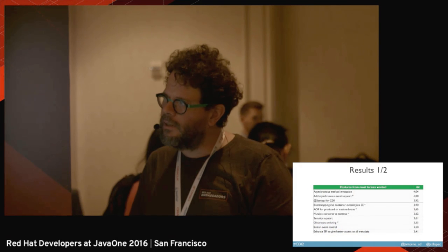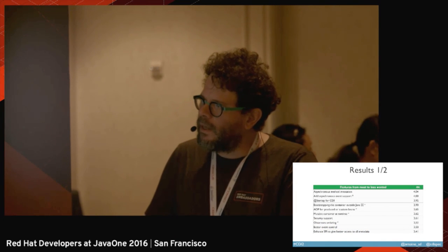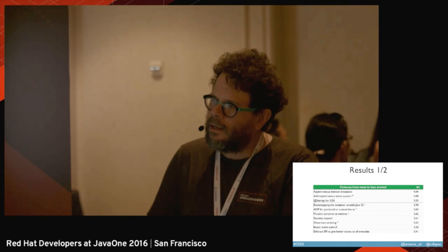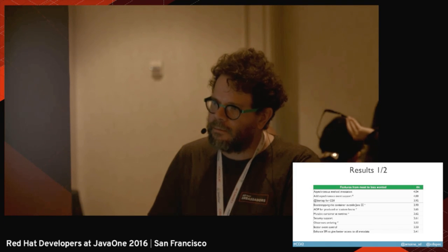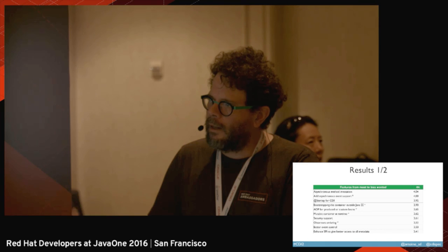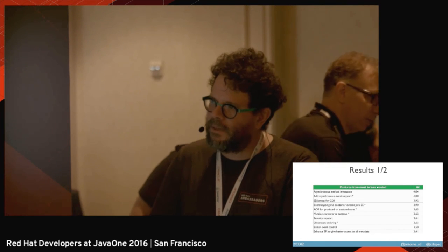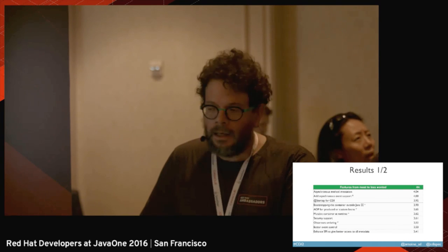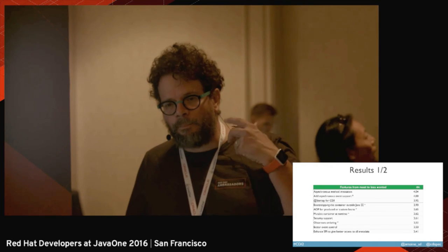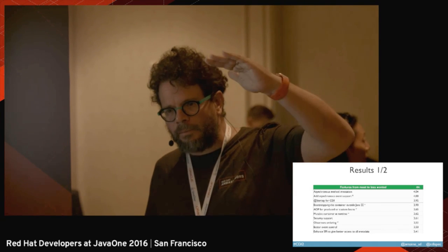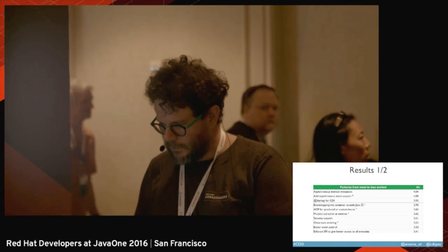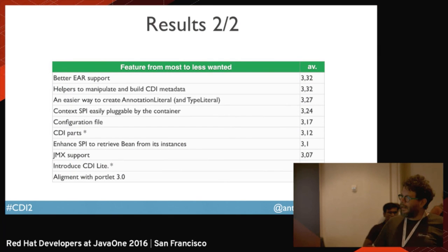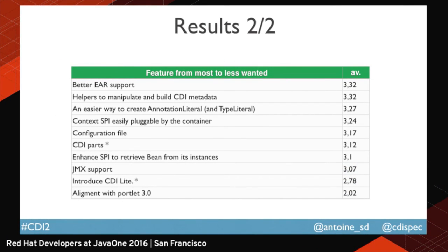I will show you the API to do this bootstrapping. We are still working on solutions to bring interceptors and decorators on producers and custom beans, but it will probably be done. Mutable container at runtime will probably not happen — it's too complicated and would break the specification. We did add ordering of observers, so you can give a priority to your observer to ensure one is called before another. We should also know that we will probably launch a CDI 2.1 after CDI 2 to answer new needs from our users.